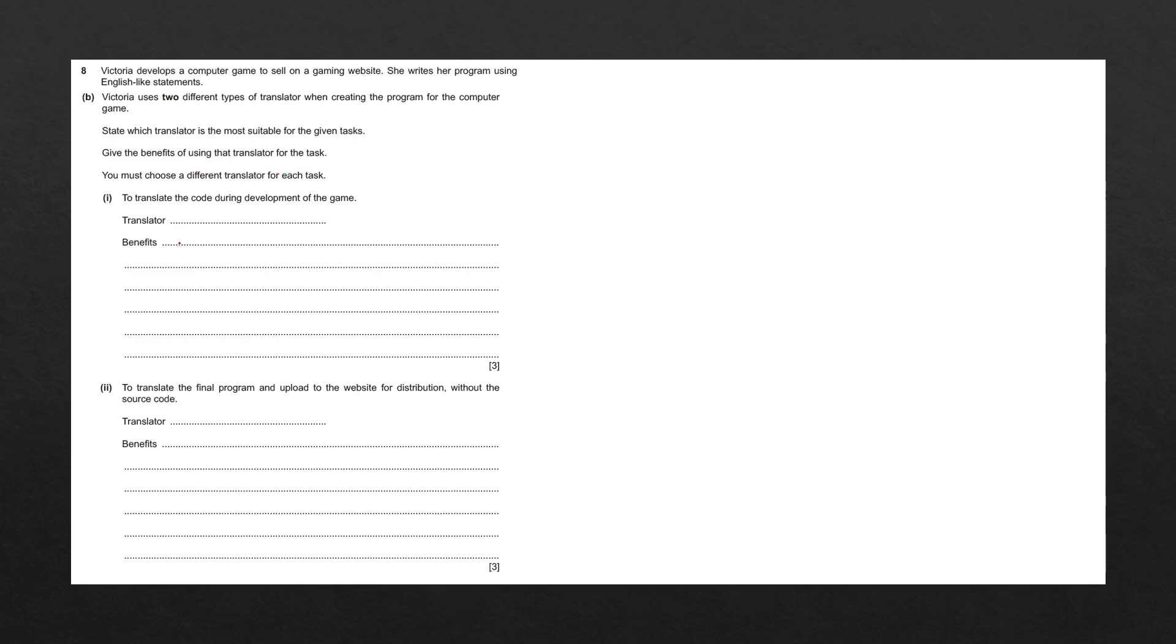The first thing we need to figure out is if we're speaking about high-level languages or low-level languages. Examples of high-level languages would be languages such as Python, Java, or JavaScript. Low-level languages would include assembly or machine code.